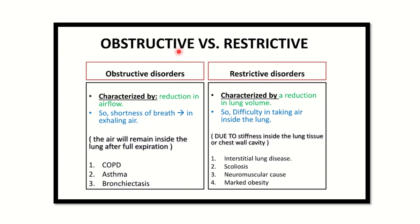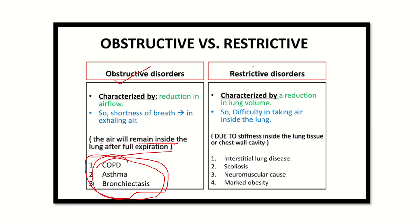In obstructive lung disease, there is obstruction in the airways — air entry is poor or very limited. Examples include asthma, COPD, and bronchiectasis. In these conditions, air trapping occurs — air remains within the lungs and lung volume gradually increases. In contrast, in restrictive lung disease the main problem is failure of lung expansion, and lung volume is reduced. Examples include obesity, neuromuscular causes, scoliosis, and interstitial lung disease.